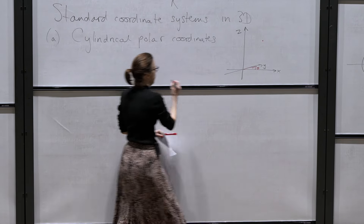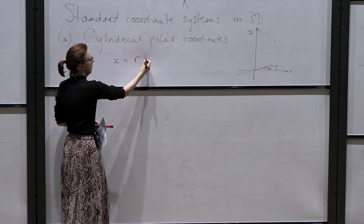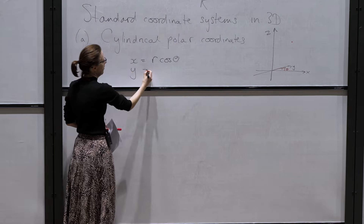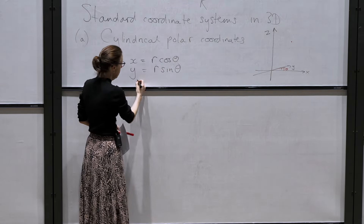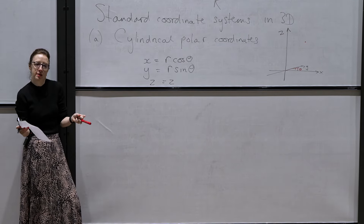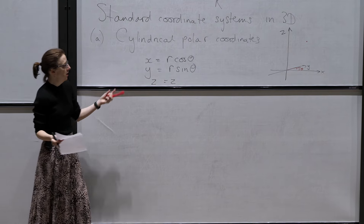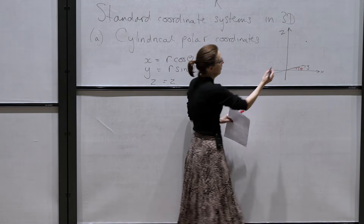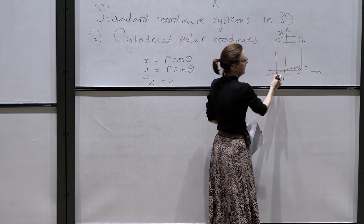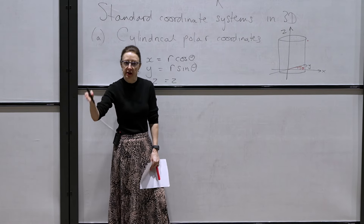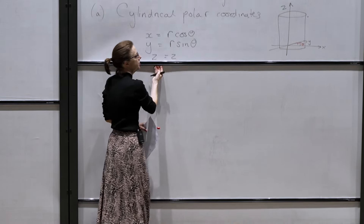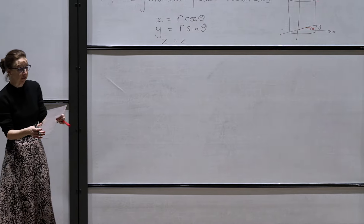In cylindrical polar coordinates, the x-coordinate equals r cos theta, the y-coordinate equals r sin theta, and the z-coordinates are the same in the two systems. If you're doing a problem where you might be integrating something over a cylindrical domain, then this is a much better coordinate system to use. The boundary of a cylinder in this system is just a given radius with theta going all the way around — much easier than dealing with boundaries that are functions.